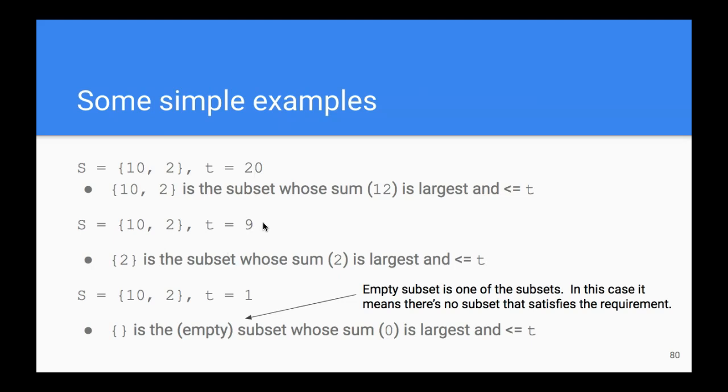What if our target is 9? We obviously cannot include 10, so the subset can only include 2. The subset with 2 has a sum of 2, which is less than 9, and we really cannot do better than that.